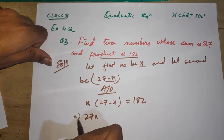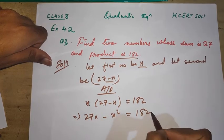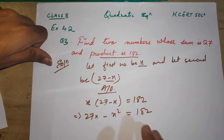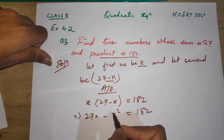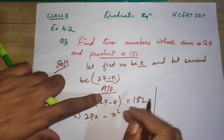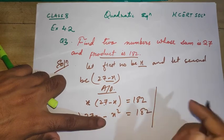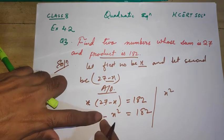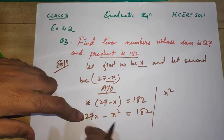So x times (27 - x) equals 182. We multiply x into this one: 27x minus x times x equals x squared. Do you find any difficulties while solving this? I'm going to take this negative sign and try to make it positive. I'm sending x squared to the other side, so it will become positive.